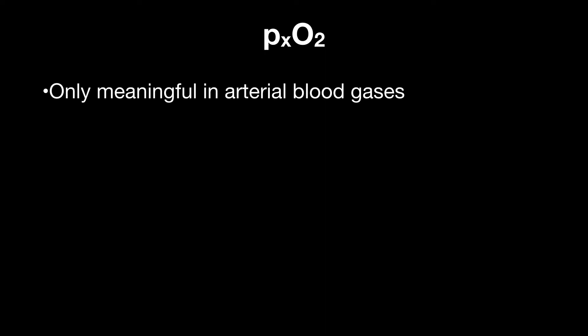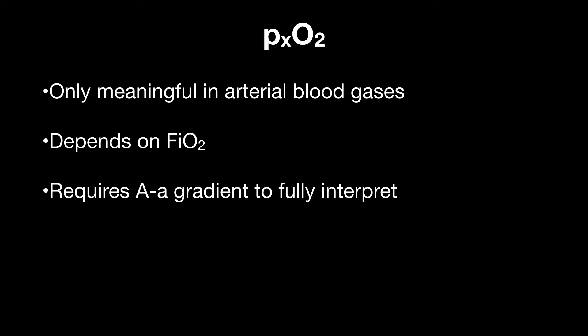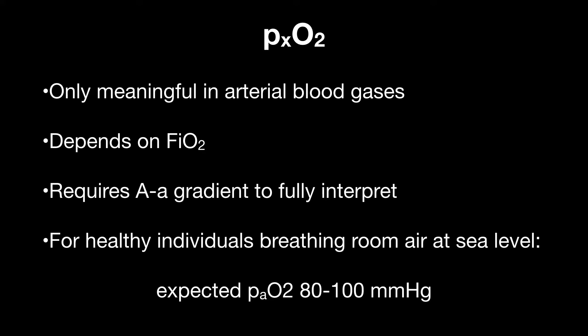PXO2 is only meaningful if it's an arterial blood gas. We often obtain venous blood gas, and sometimes we obtain even capillary blood gases. A venous and capillary blood gas, the PXO2 is not meaningful. We use it when we have an arterial blood gas. We need to have other information as well before we interpret that. It depends on the FiO2, and it requires calculating the AA gradient to fully interpret the P little aO2. For healthy individuals breathing room air at sea level, the P little aO2 is somewhere between 80 and 100 millimeters of mercury.